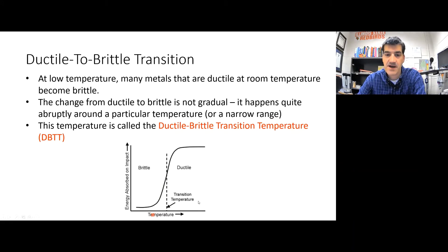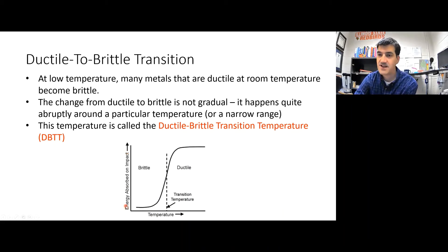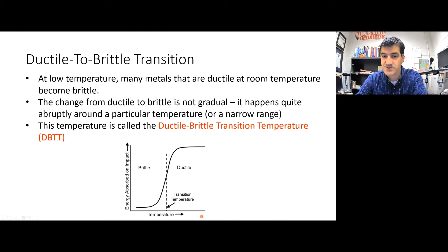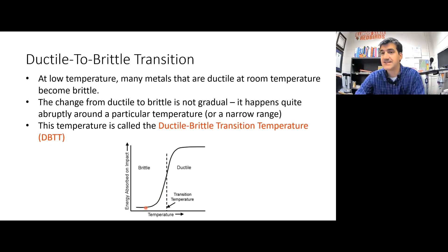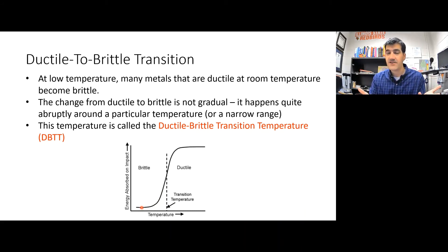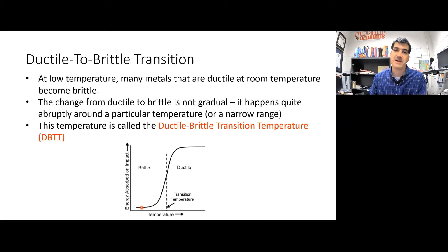Here's a plot that illustrates the ductile to brittle transition. On the vertical axis is energy absorbed on impact — i.e., toughness — and temperature is on the horizontal axis. As temperature decreases, nothing really changes up to a certain point, and then very rapidly within a very narrow temperature band, the material suddenly becomes brittle. When it becomes brittle, it requires less energy to fail — it's less tough — and it's more likely to fail catastrophically. Brittle failure happens very quickly, whereas ductile failure happens over a longer period of time with more warning.